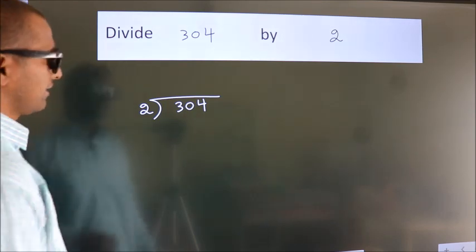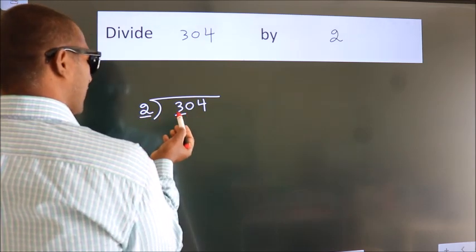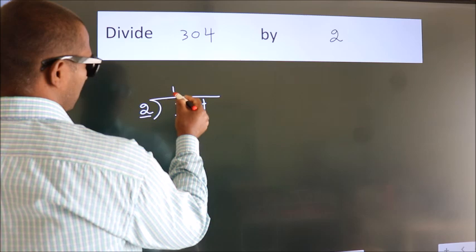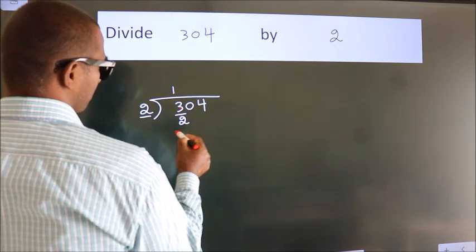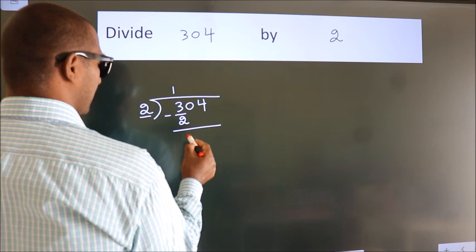Next. Here we have 3, here 2. A number close to 3 in 2 table is 2 1s, 2. Now we should subtract. We get 1.